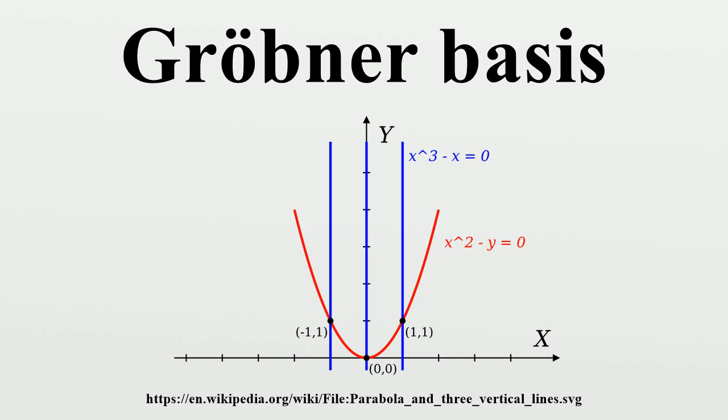In the case of univariate polynomials, if G is reduced to a single element g, then h is the remainder of the Euclidean division of f by g. Qg is the quotient and the division algorithm is exactly the process of lead reduction. For this reason, some authors use the term multivariate division instead of reduction.